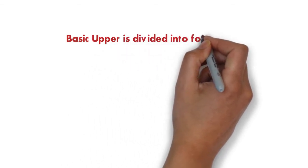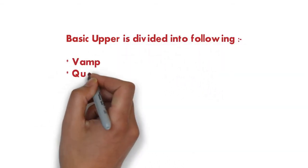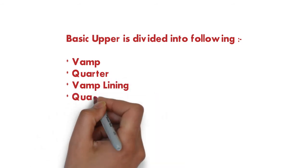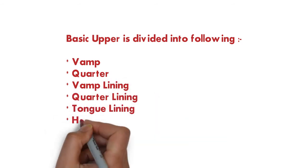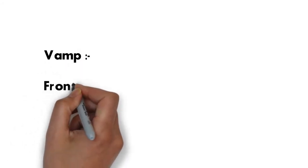Basic upper is divided into following parts: number one is vamp, quarter, vamp lining, quarter lining, tongue lining, and heel grip.